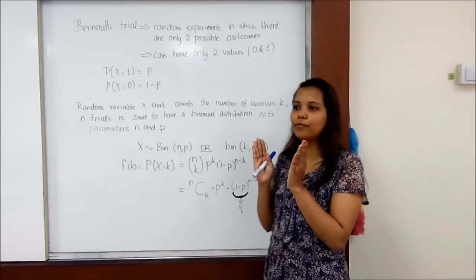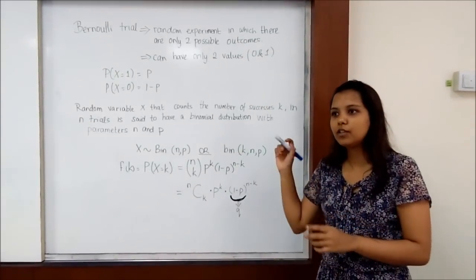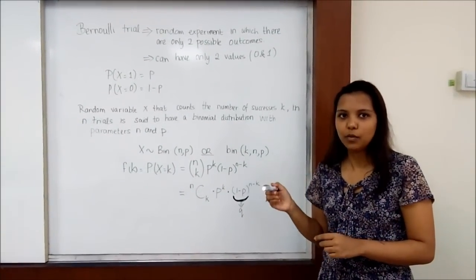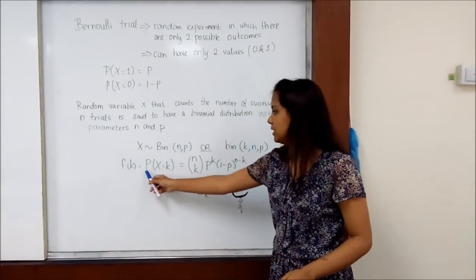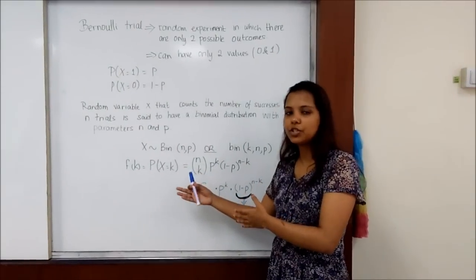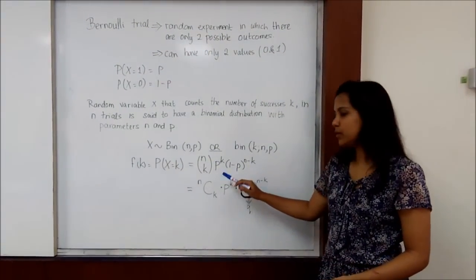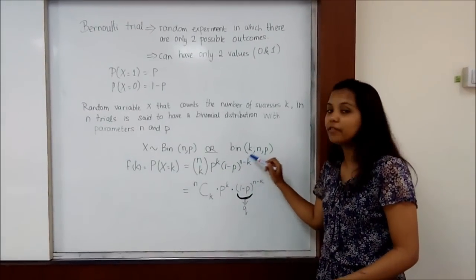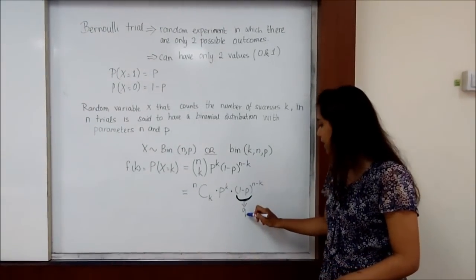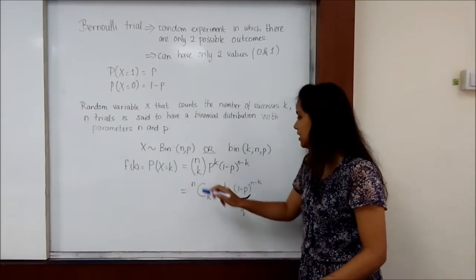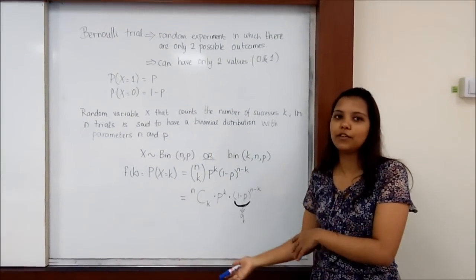For the probability of one value, let's say the value is k and the total number is n. The probability of the random variable, which follows a binomial distribution, at value k equals n-choose-k times p to the power of k times 1 minus p to the power of n minus k. Usually 1 minus p is denoted by q, and n-choose-k can be typed on the calculator.